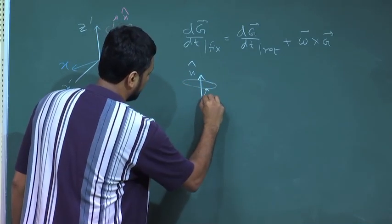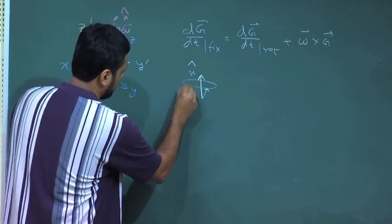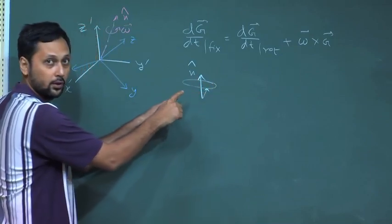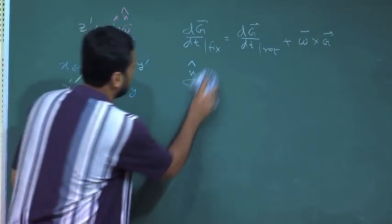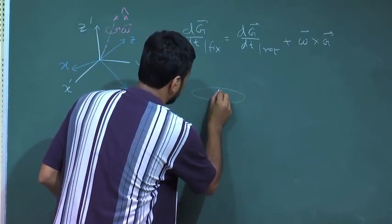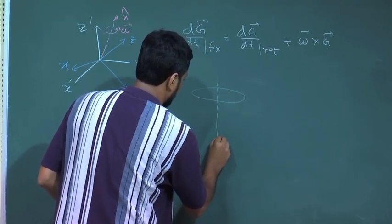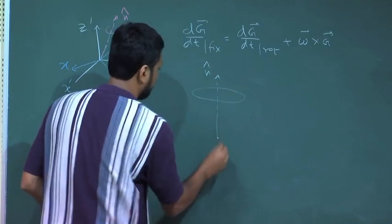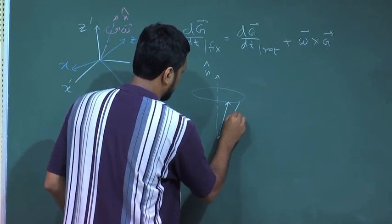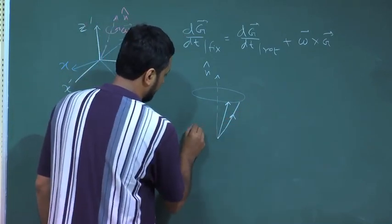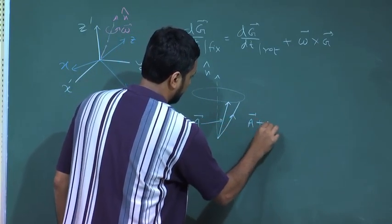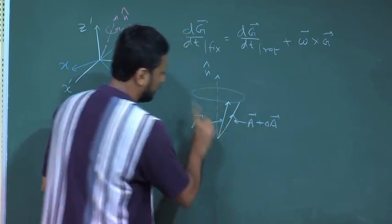So essentially, any vector rotating around this particular axis has to stay on a cone — on this surface. Let me draw it a little bigger. This is the direction n-cap, this is one position of the vector, and this is another position of that vector. Let us call this vector 'a' here, and 'a plus delta a' here as the direction is changing.